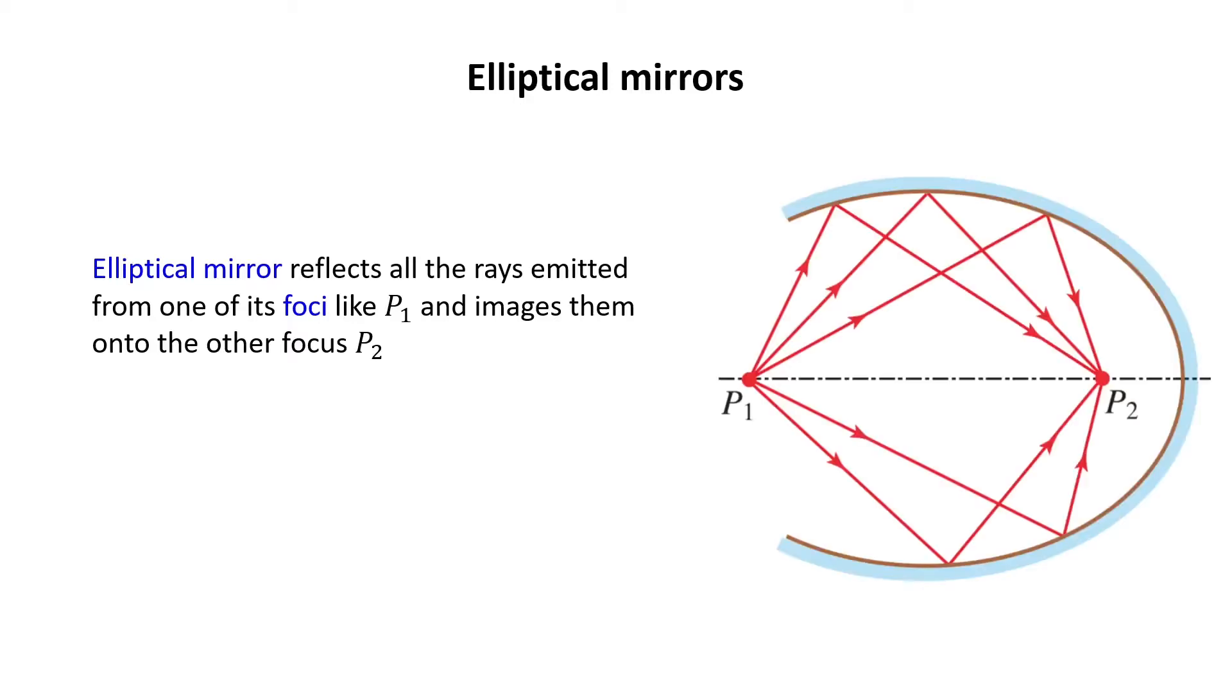Now, elliptical mirrors. An elliptical mirror reflects all the rays emitted from one of its foci, like P1, and images them onto the other focus, P2, as you see in this figure.